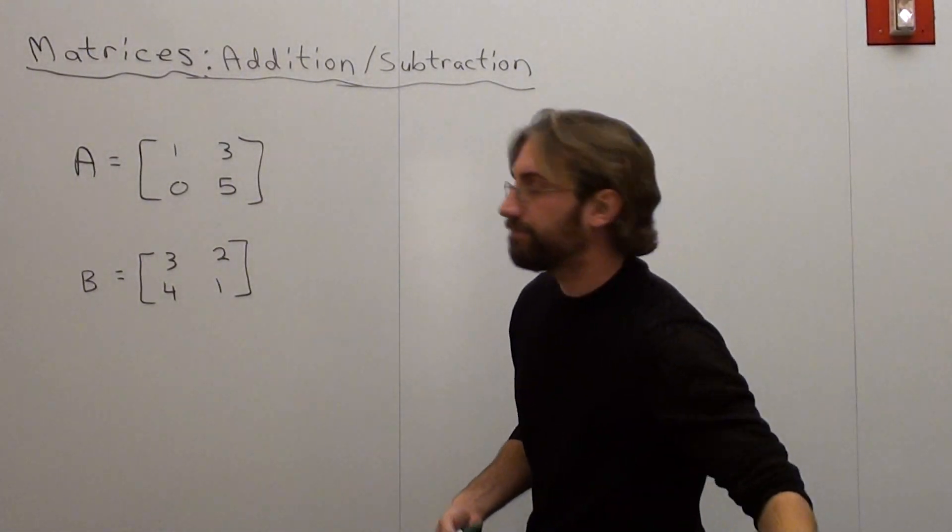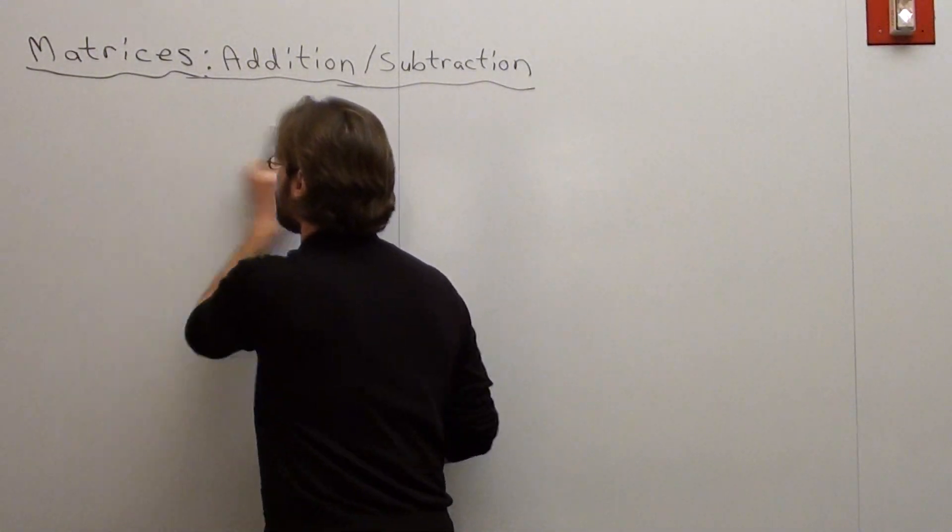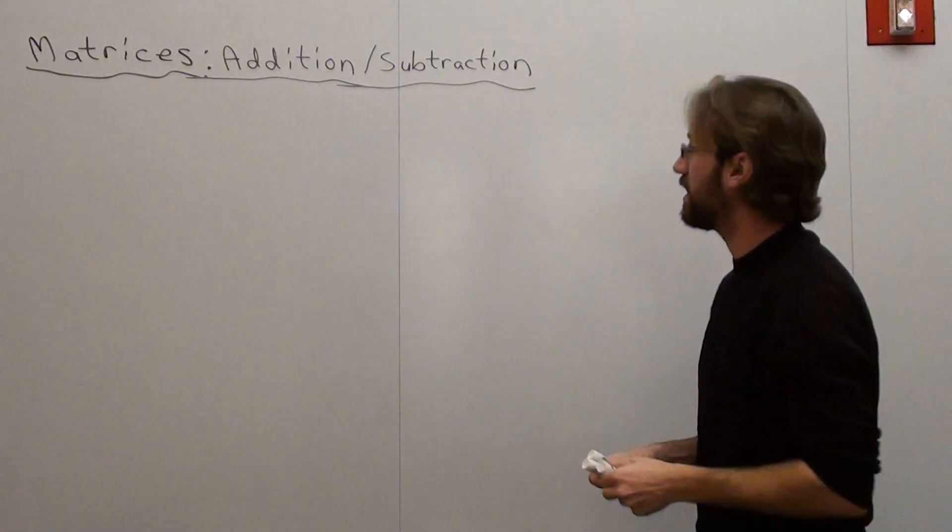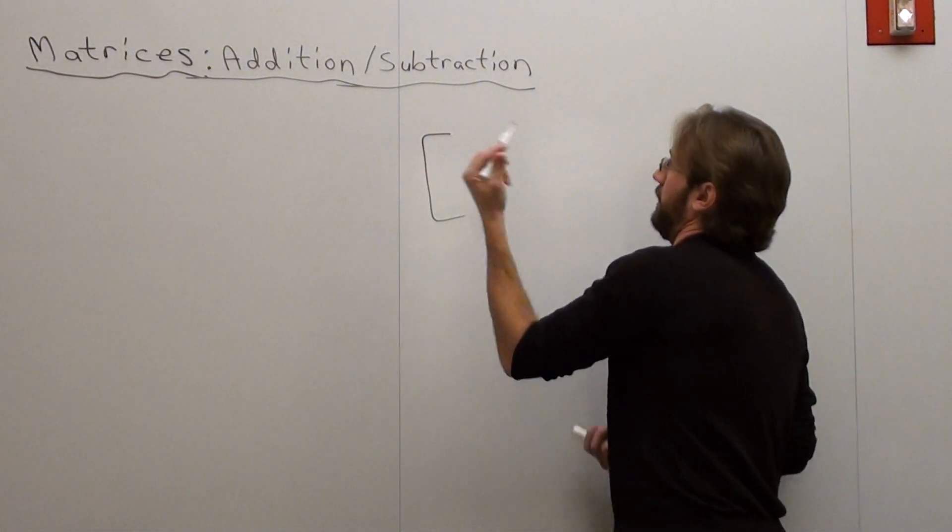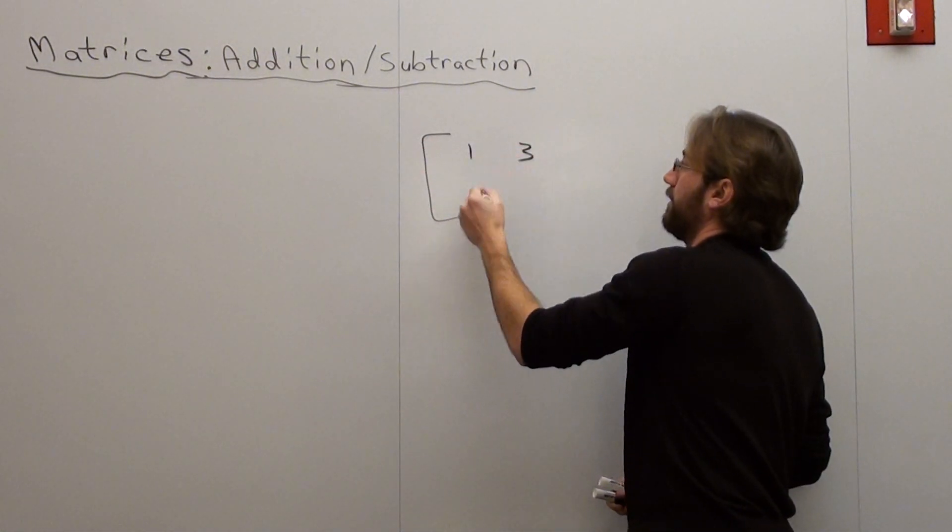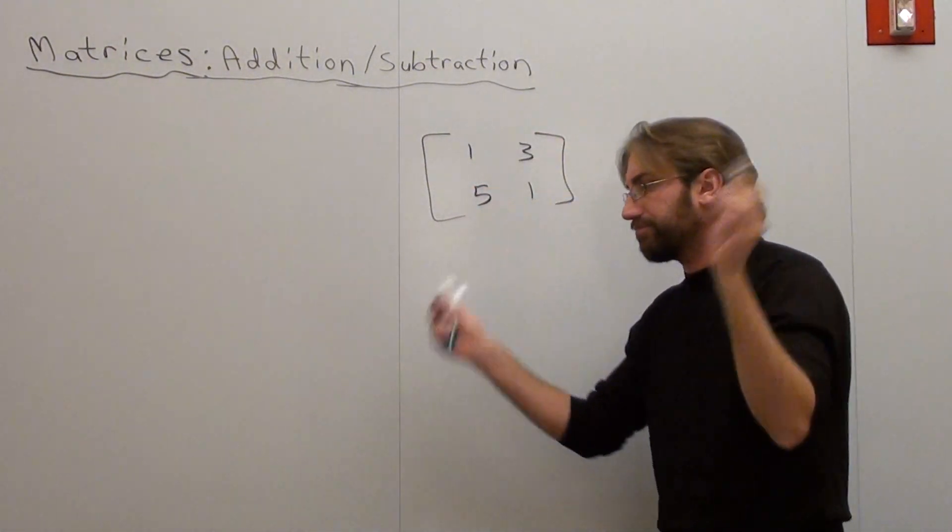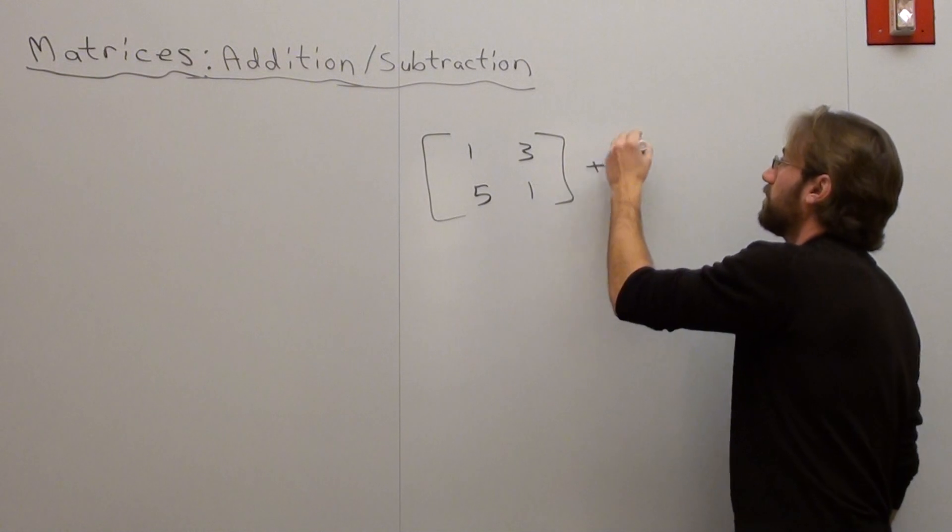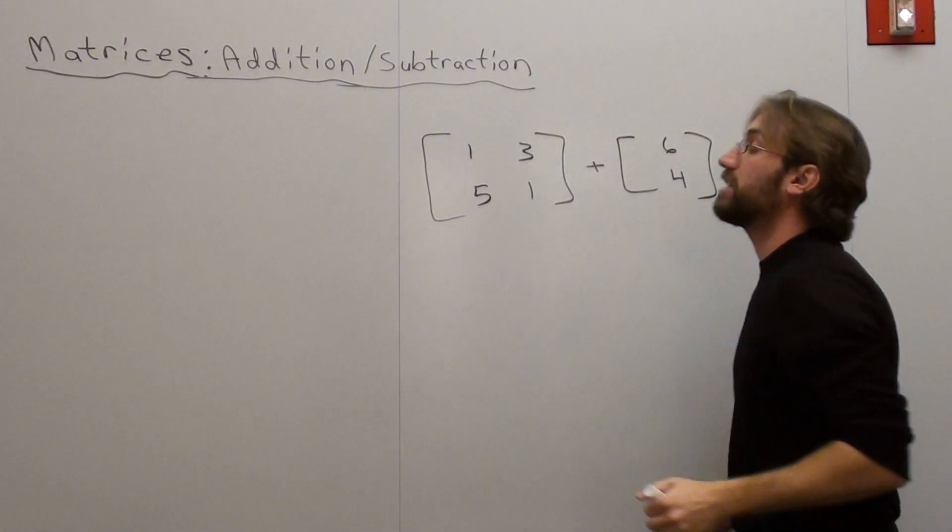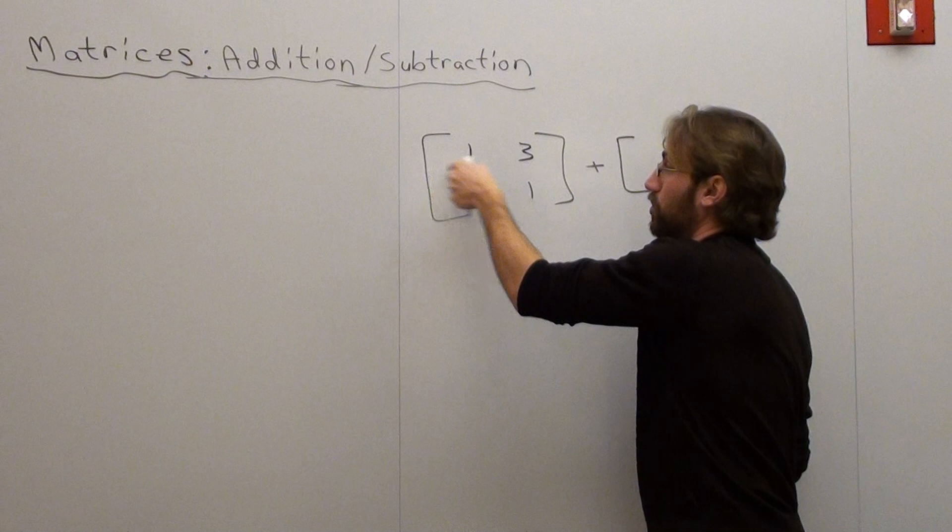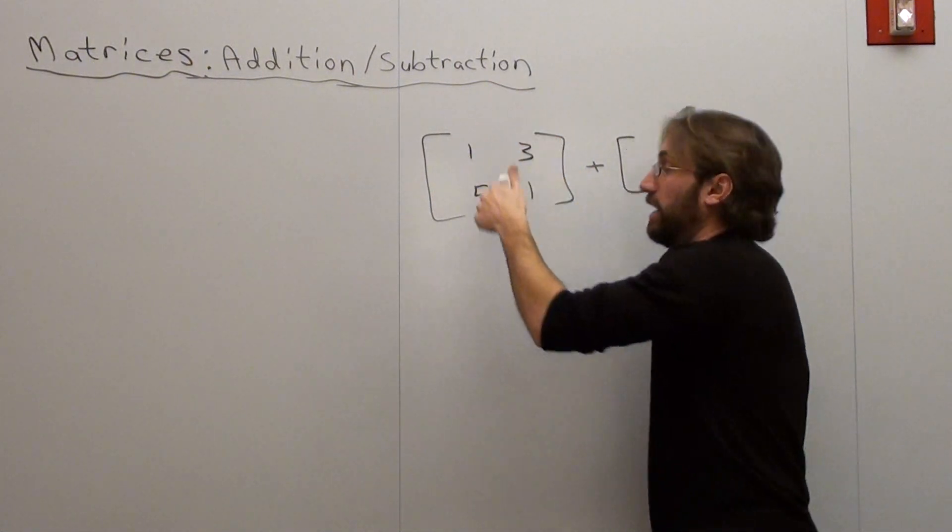I want to add these together. 1, 3, 5, 1, plus 6, 4. This matrix is a 2 by 2. Two rows, two columns.